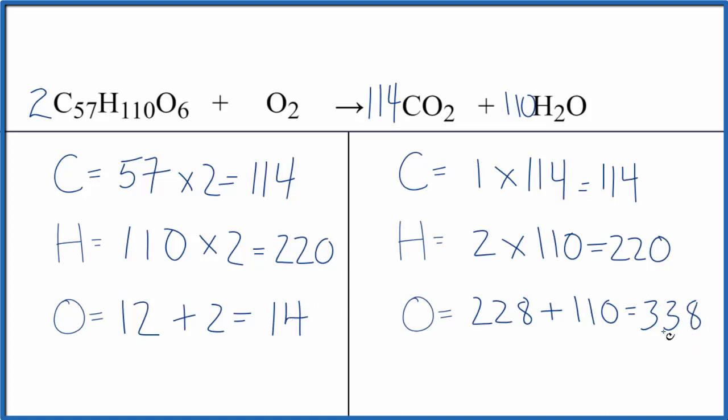So now if we can get 338 oxygens on this side, we're good. So think of it this way. 12 plus some number equals 338. So we could just subtract 12. That would give us 326. So 12 plus 326, that'll give us the 338.